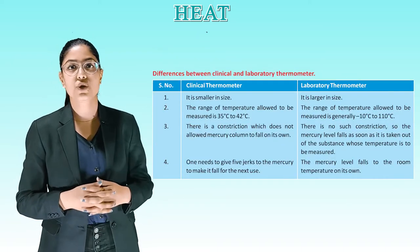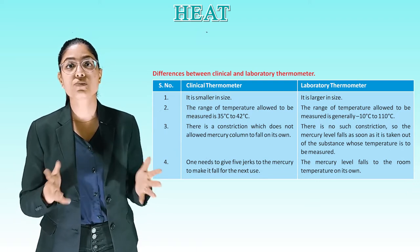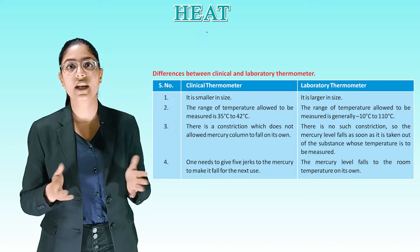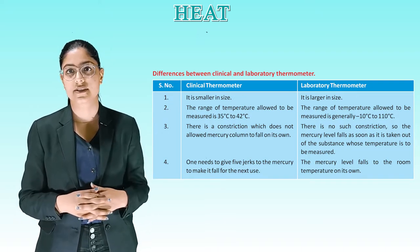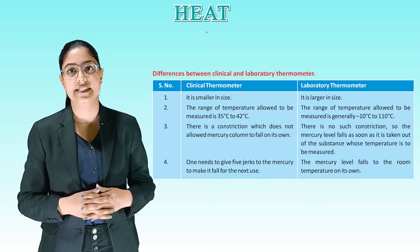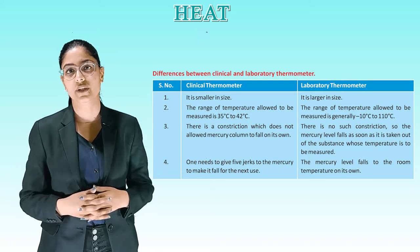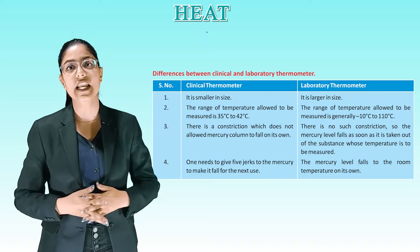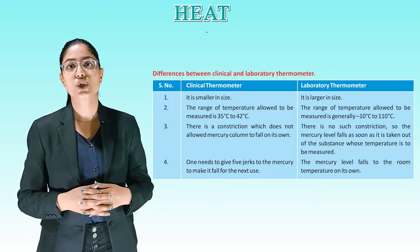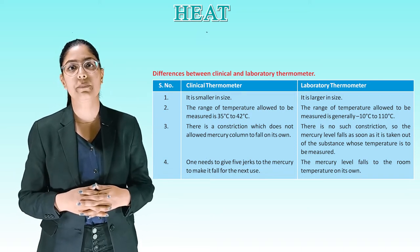Differences between clinical and laboratory thermometers. Clinical thermometer is smaller in size; laboratory thermometer is larger. Clinical thermometer measures 35°C to 42°C; laboratory thermometer measures generally −10°C to 110°C. Clinical thermometer has a constriction that does not allow the mercury column to fall on its own. Laboratory thermometer has no such constriction, so the mercury falls as soon as it is removed from the substance. For a clinical thermometer, one needs to give jerks to bring the mercury down before the next use.